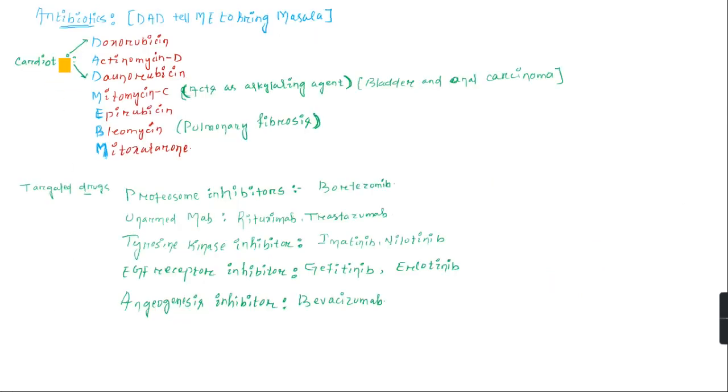Antibiotics can be remembered by the mnemonic 'tell me to bring masala': D for doxorubicin, A for actinomycin D, D for daunorubicin, M for mitomycin C, E for epirubicin, P for bleomycin, M for methotrexate. Important points: doxorubicin and daunorubicin are highly cardiotoxic. Mitomycin C acts as an alkylating agent and is given in bladder and anal carcinoma. Bleomycin's important side effect is pulmonary fibrosis.